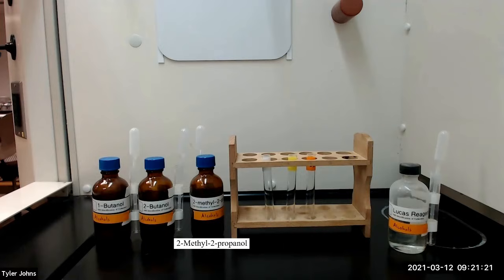This test depends on the appearance of an alkyl chloride as an insoluble second layer when an alcohol is treated with the Lucas reagent, which is a mixture of hydrochloric acid and zinc chloride.